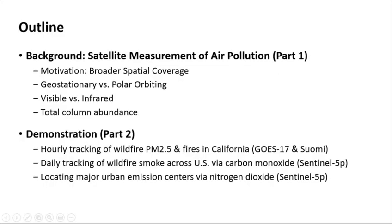The outline of this lecture is as follows. We will first provide some background. We will discuss the motivation and prime advantage of satellite air quality measurements, which is to provide broader spatial coverage of measurements compared to what can be obtained using ground monitoring alone. We will then give a brief background on satellite remote sensing, the difference between geostationary and polar orbiting satellites, visible vs. infrared detection, and a discussion of total column abundance, which is how satellite remotely sensed air pollution is generally expressed.